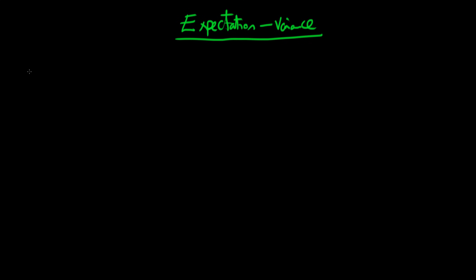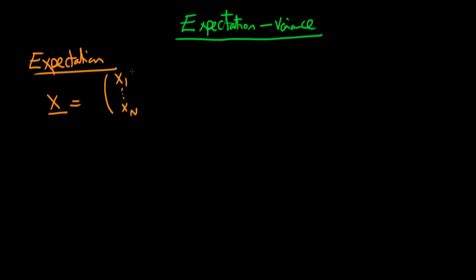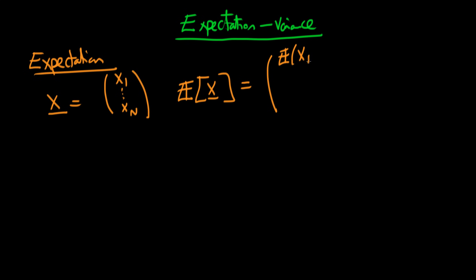If we think first of all about what it means to take the expectation of some sort of random vector, we can write out generally our vector — let's call it x — as being composed of components x1, x2, all the way through to xn. The way we define the expectation of that random vector x is as the vector composed of the expectations of each of the elements of x: the top element is the expectation of x1, the second element is the expectation of x2, continuing down to the expectation of xn.